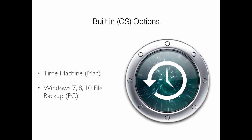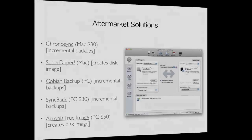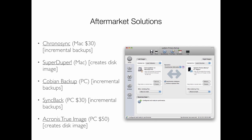For home computers there are built-in options — Time Machine on Mac, Windows Backup on PC — and you can back up to an external hard drive. There are also aftermarket solutions like Chronosync, which gives finer control over where files go. SuperDuper can copy your entire hard drive onto another so that if one fails, you can swap it in and never know the difference. There are also online backup solutions — Dropbox gives you 2 gigs free, though with Easter egg hunts and referrals you can get up to about 20 gigs.